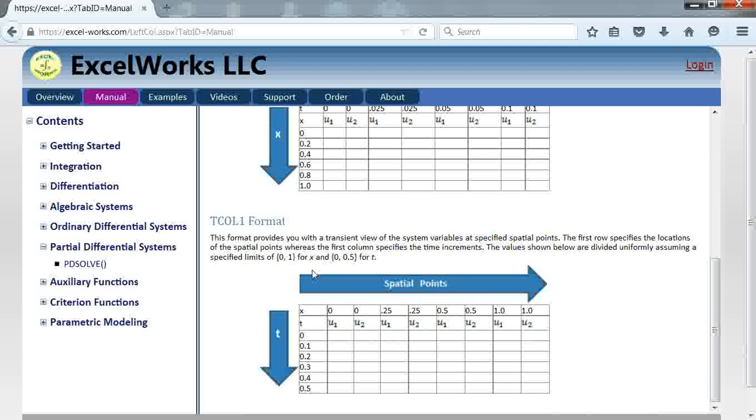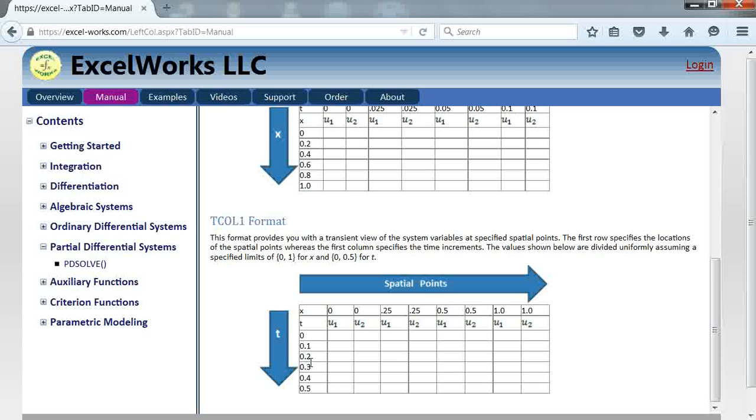The other format, which is called the tcall1 format, flips the role of the time and space. The time is now listed in the first column, whereas the space is listed in the first row. And the advantage of this format allows us to do an easy transient view of the variables at selected spatial points as we will see in the example.